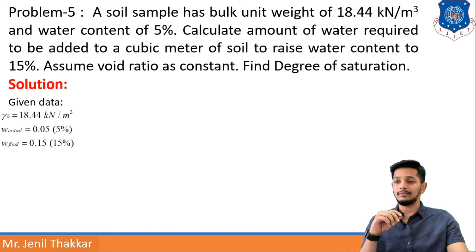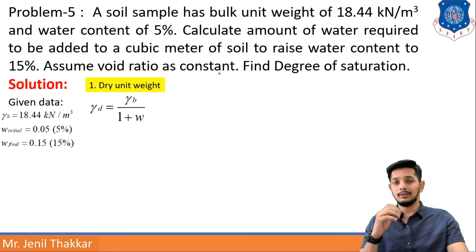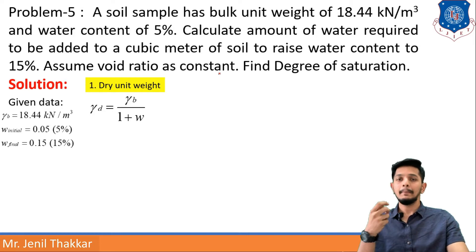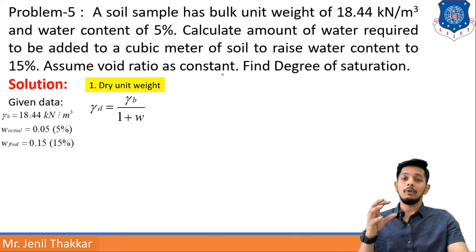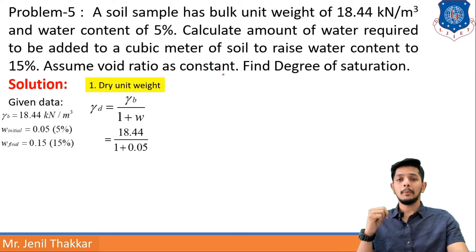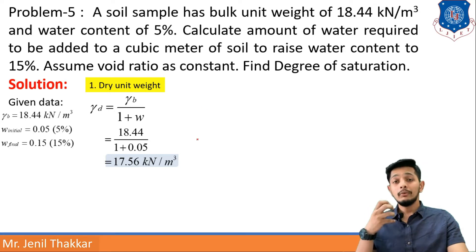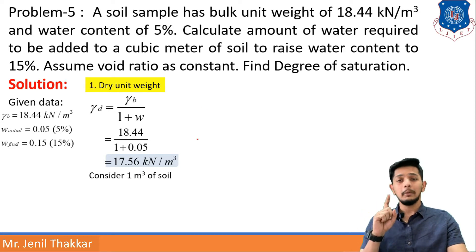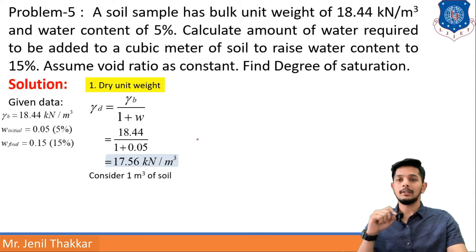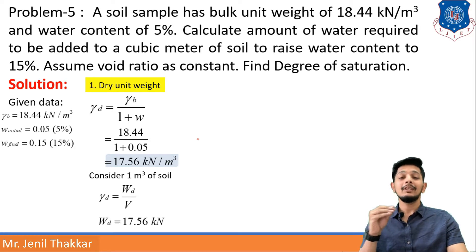Writing given data: gamma_b is provided, W_initial is 5%, W_final after adding water will be 15%. Assume void ratio as constant, so E is constant. First we will find dry unit weight using the formula gamma_d = gamma_b / (1 + w), using the initial w. Putting the values of gamma_b and w, I get dry unit weight gamma_d as 17.56 kN/m³. Now considering the soil as 1 m³, the dry weight will be 17.56 kN.